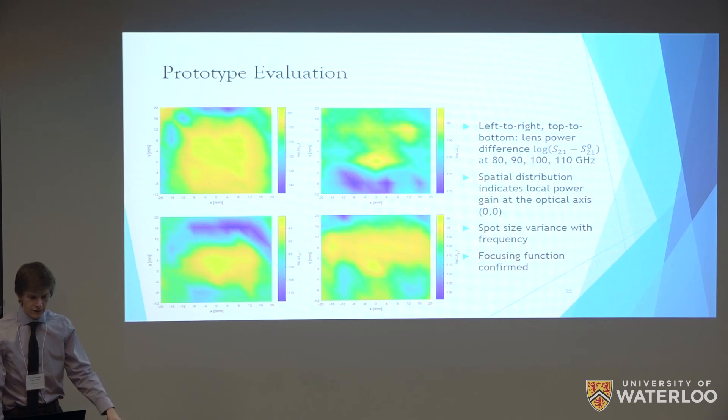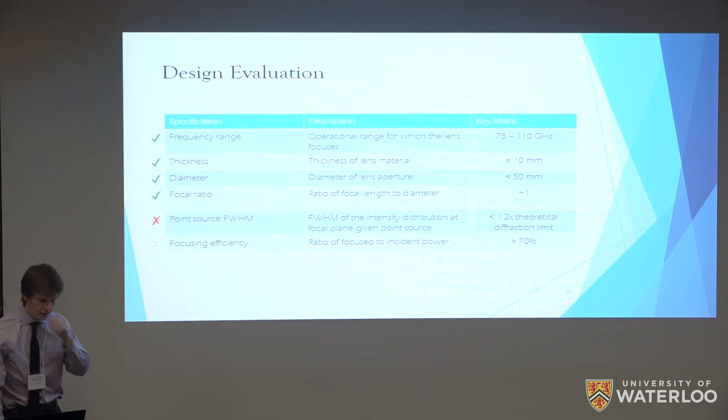Looking at our data, if we try to evaluate our design: we were able to design a lens. As you can see from the previous slide, the lens does seem to focus the radiation. However, in terms of our requirements for the spot size, the full width half maximum is still too large, larger than our requirements. There's still quite a bit of optimization work to do. In terms of focusing efficiency, unfortunately due to time constraints we were not able to properly calibrate our setup to properly measure the power. That's still a bit of a question mark at the moment.